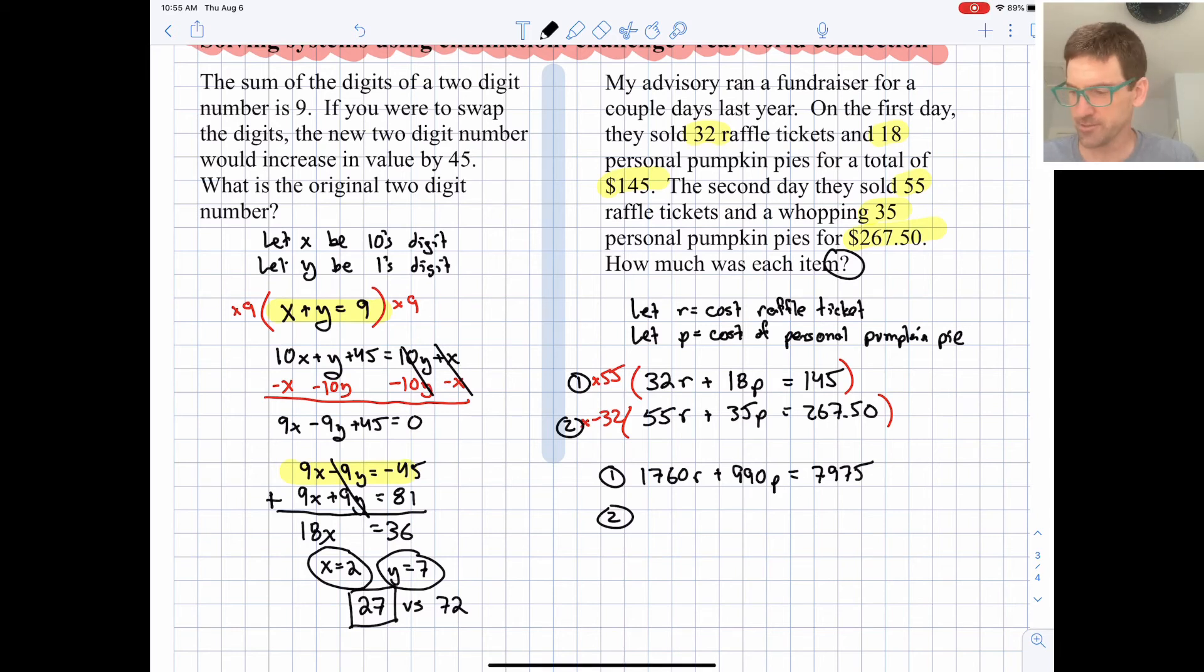Second equation turns into a negative 1760r, so you can see why we did that multiplication. We're going to have some canceling out. Negative 1120p, and then times 32, a negative 8560.